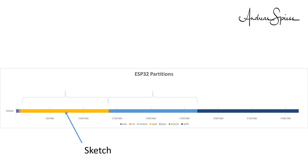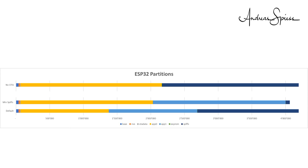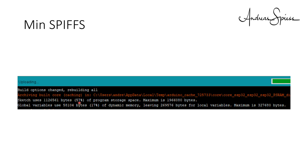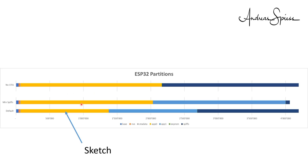The bigger the space for our sketch in App0, the bigger also App1. If we want to increase App0, we also have to increase App1. This leads us to a configuration where we have to sacrifice the space for SPIFFS, or the OTA capability for more sketch space. The two different possibilities are called MinSPIFS and NoOTA. The MinSPIFS configuration creates nearly double the sketch space, and our BLE server example uses only 57%. You still have full OTA capabilities and 60k SPIFFS.